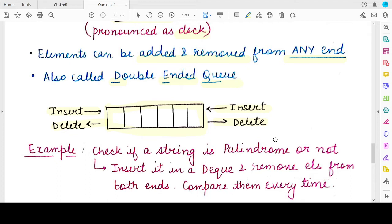So what is an application of a deque? Why is it useful? Deque is very useful when you have to check whether a string is a palindrome or not. So what is a palindrome? Any sequence of characters which reads the same, which has the same characters at the beginning and at the end when we traverse it from both the sides one by one.